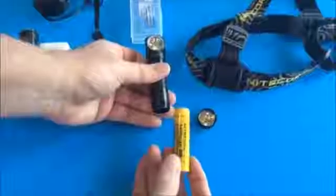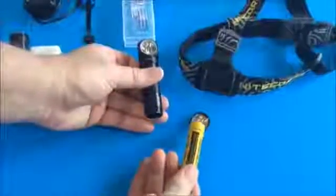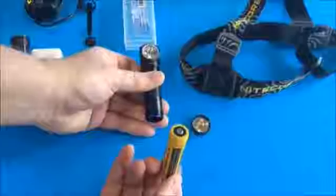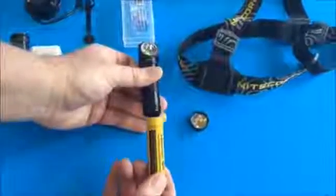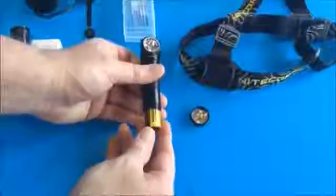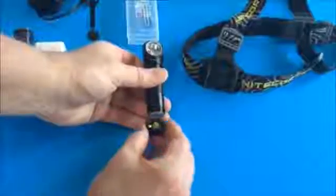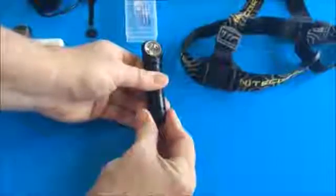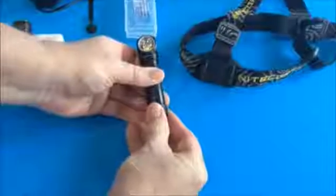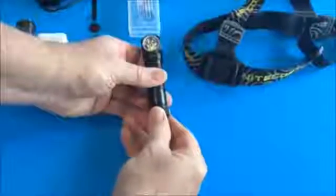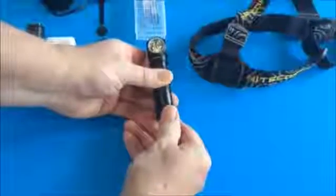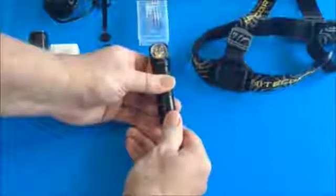After you fully charge the battery you want to insert it into the flashlight by removing the tail cap and you'll see here this little button that's the positive and it goes in towards the head of the flashlight. After you do that you want to install this cap and screw it on very carefully to make sure you don't misalign it and you also want to make sure that you screw it on tightly to help make it more waterproof.